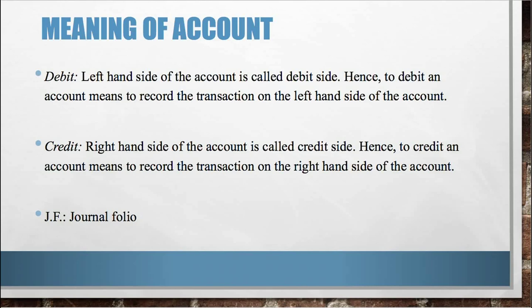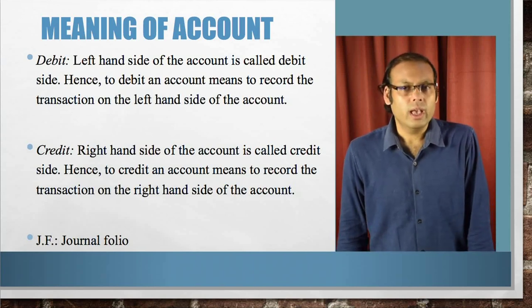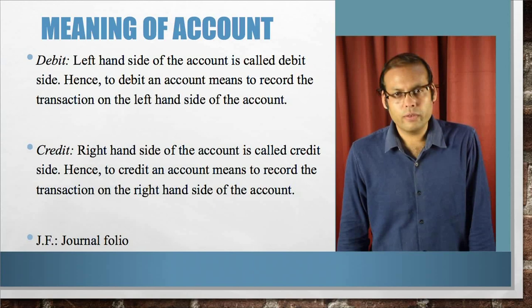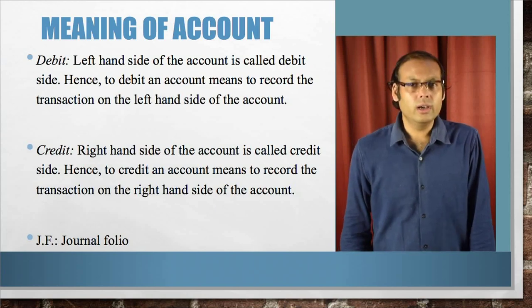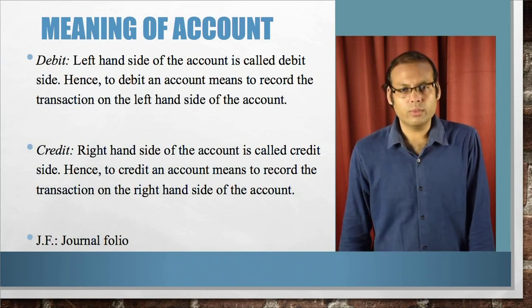There is another term: JF, which means journal folio. Folio means page number — specifically, the page number of the journal book where we have recorded the particular transaction. When we come to the format of the journal, we will see another term, LF, which means ledger folio — the page number of the ledger book. So there will be a cross-reference between these two books: the journal book and the ledger book.